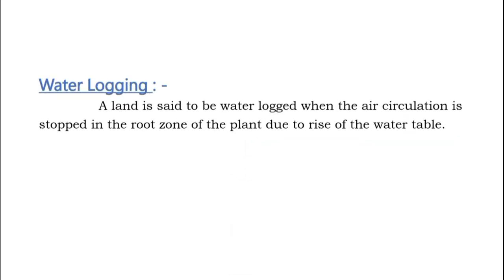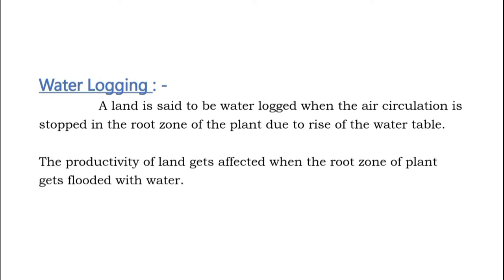Waterlogging: A land is said to be waterlogged when the air circulation is stopped in the root zone of the plant due to rise in the water table. The productivity of land gets affected when the root zone of plant gets flooded with water. Waterlogging also leads to salinity.